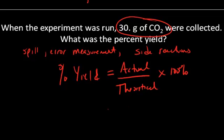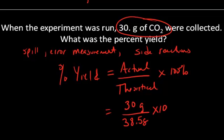In this case, it's 30 grams divided by 38.5 grams times 100%, which equals 78% yield.